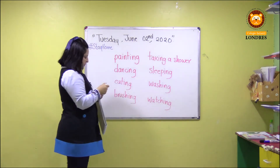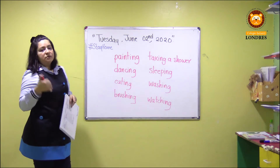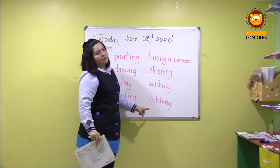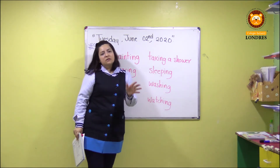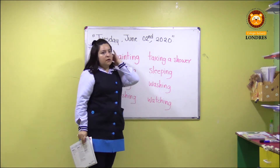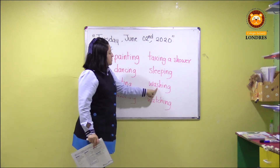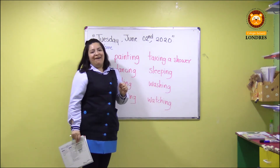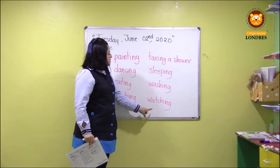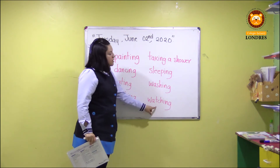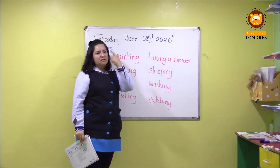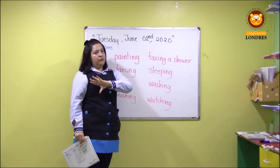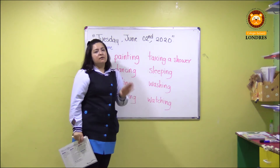Recuerden que en las cápsulas anteriores hicimos mucha énfasis en estos verbos porque algunos se estaban confundiendo. Acuérdense que cuando estoy con 'sh', washing — lavando; pero si es con 't', watching — observando o viendo, ¿vale? Para que no se vayan a confundir.